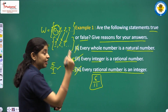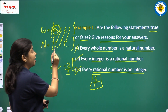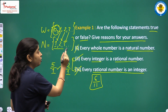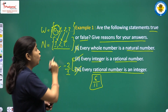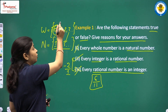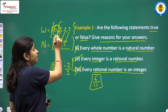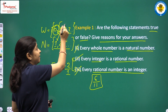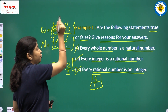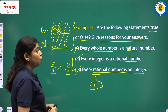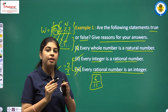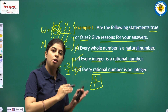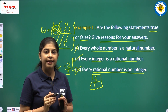Every natural number is a whole number. Natural numbers start from 1 and whole numbers start from 0. After 0, the whole numbers are 1, 2, 3... which are all natural numbers. So every natural number is also a whole number — this is true.